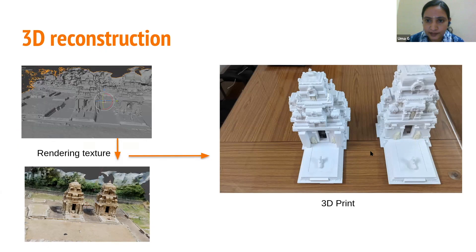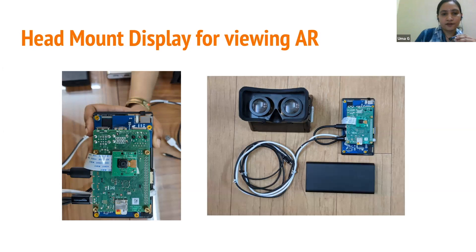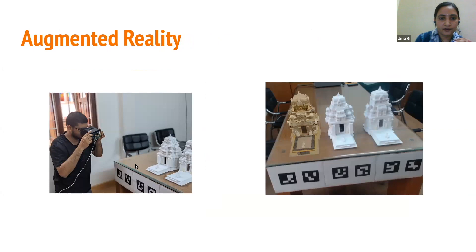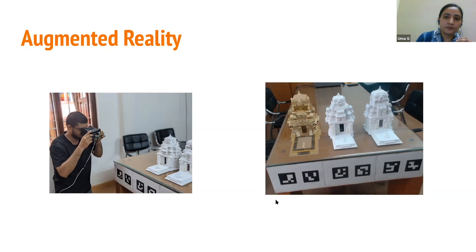We created a 3D model and for our prototype took a 3D print of it. This is what our tabletop prototype of the site looks like. The augmentation of the third temple is overlaid where it should appear. This is done through our AR framework. We also built a head-mounted display in-house from many components. When you wear it and run our AR software — again using the same markers we saw earlier — you can see the complete picture of the place, with the third temple digitally reconstructed.